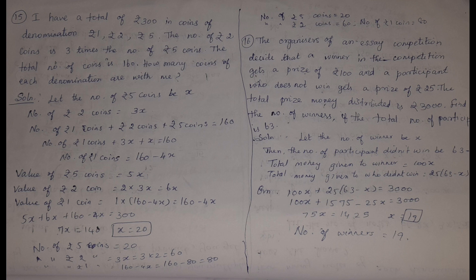Fifteenth problem: I have a total of 300 rupees in coins of denomination 1 rupee, 2 rupee, and 5 rupee. The number of 2-rupee coins is 3 times the number of 5-rupee coins. Total number of coins is 160. Let 5-rupee coins = x, so 2-rupee coins = 3x and 1-rupee coins = 160 - 4x. Solving: 5x + 6x + (160 - 4x) = 300, so x = 20. Coins: 5-rupee: 20, 2-rupee: 60, 1-rupee: 80.